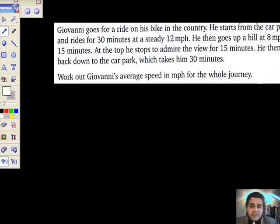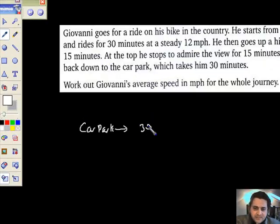This is what he did. He goes for a ride on his bike in the country and he starts from the car park. Right, so here we are at the car park and we're going to ride somewhere. So what did we do? We were going to ride for 30 minutes at 12 miles per hour.